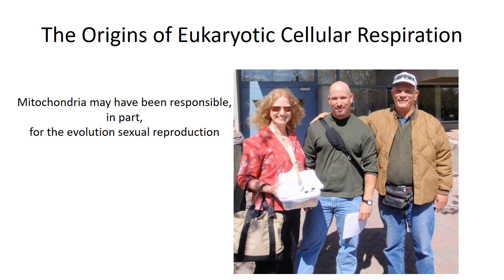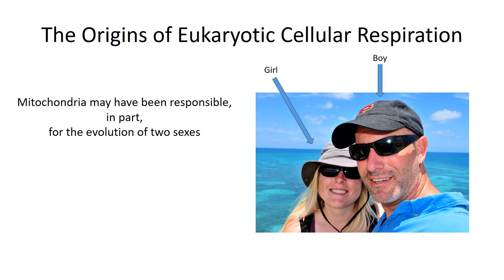The importance of mitochondria doesn't stop there. It turns out that almost all eukaryotes have some form of sexual reproduction. Here are my parents — sexual reproduction is where you take the gametes from two different parents and form an offspring. I have 23 chromosomes from my dad and 23 chromosomes from my mom. We think there's actually very good evidence supporting that mitochondria led to the evolution of sexual reproduction in eukaryotes, and also to the evolution of two sexes — male and female. The evolution of sexual reproduction and two sexes has perplexed scientists for hundreds of years, and I'll discuss more of that when we talk about meiosis.